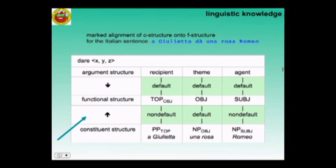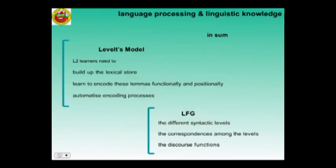To summarize this part: PT gets from Levelt's model the lexical store to be built up, the encoding functionally and positionally of words, and the automatization process. And it gets from LFG the three different syntactic levels, the formal correspondences between these levels, and the discourse functions.